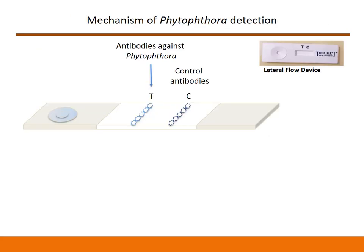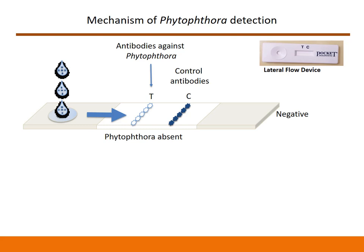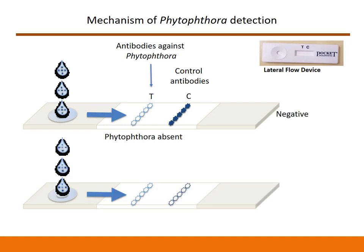I have a schematic here to demonstrate how this lateral flow device works. The lateral flow device has a circular well to load the sample and a rectangular frame to observe results. Labels T and C mean test and control. This device has Phytophthora antibodies lined up at T and control antibodies lined up at C. When you load the sample in the well, it flows through the device and reacts with the respective antibodies to produce a color band. If there is no Phytophthora, only one blue band will appear at C. If Phytophthora is present, two blue bands will appear — one at T and one at C.